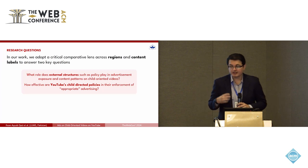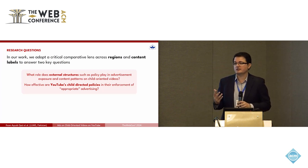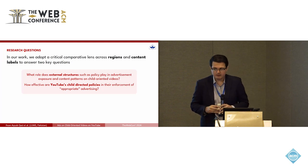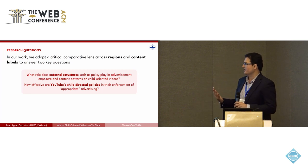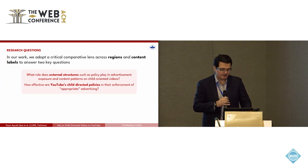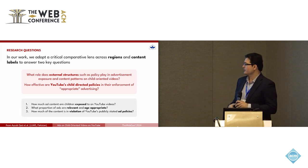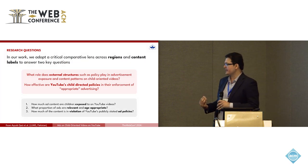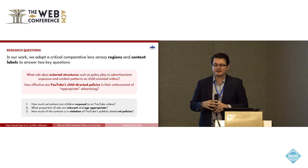In our work, we adopt a critical comparative perspective across regions and content labels to answer two key questions: what role do external structures such as policy play in ad exposure and content patterns on child-oriented YouTube videos, and how effective are YouTube's child-directed policies in enforcing appropriate advertising? This translates into three micro questions: how much ad content are children exposed to, what proportion of ads are relevant and age-appropriate, and how much content is in violation of YouTube's own publicly stated ad policies?